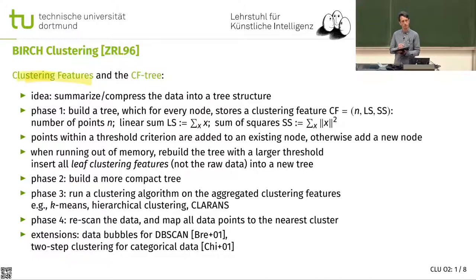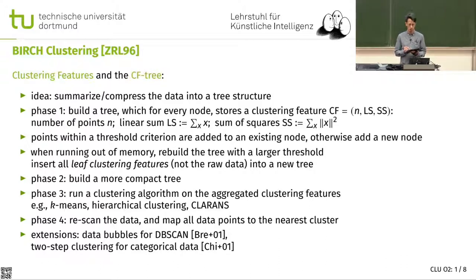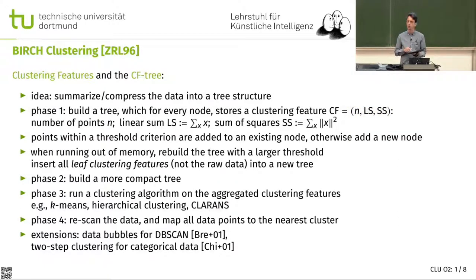A clustering feature is a compact summary statistic of a sub-part of the data. These clustering features are organized in a tree. They consist of an integer count, a vector for the linear sum, and a sum of squares. Based on that, they defined distance measures used in building the tree.